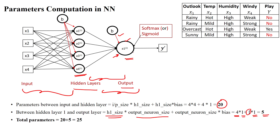From the output layer, we are getting the predicted output. After that, we can apply a loss function to calculate the difference between the target output and predicted output, based upon any loss function. Thanks for watching.